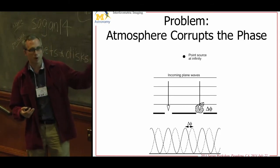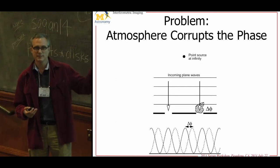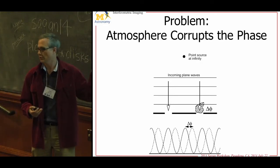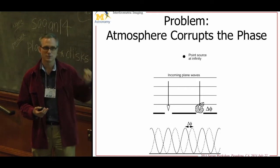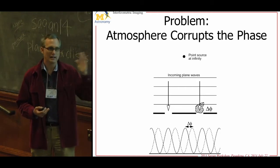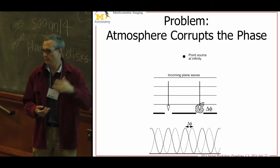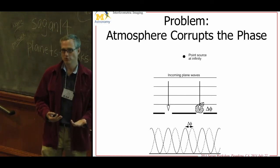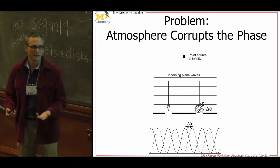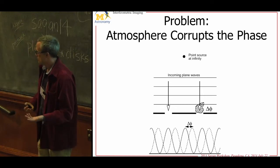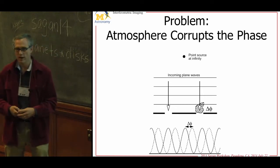You take short exposures to freeze the pattern — if you didn't, it would just average itself out. Freeze the fringes with short exposures, measure the amplitudes, calibrate with a reference calibrator, and you can measure amplitudes. That's great for binary stars and simple models — you can do a lot of science with that.